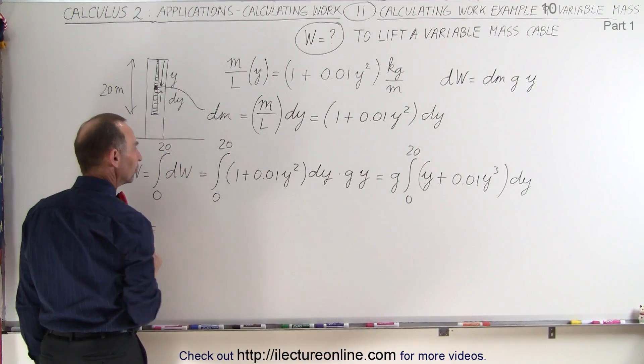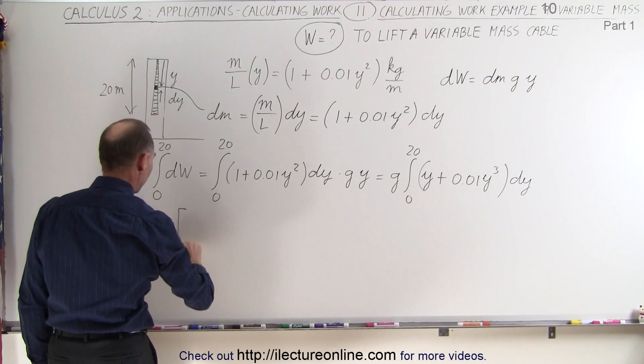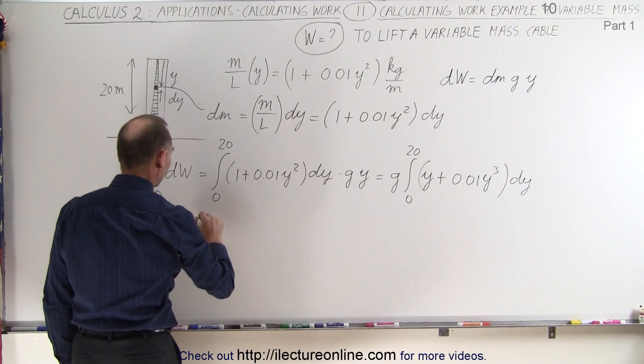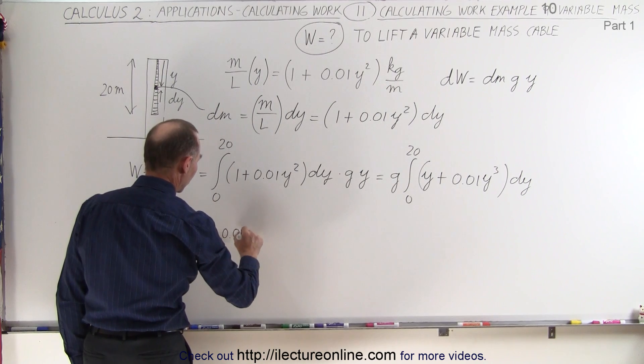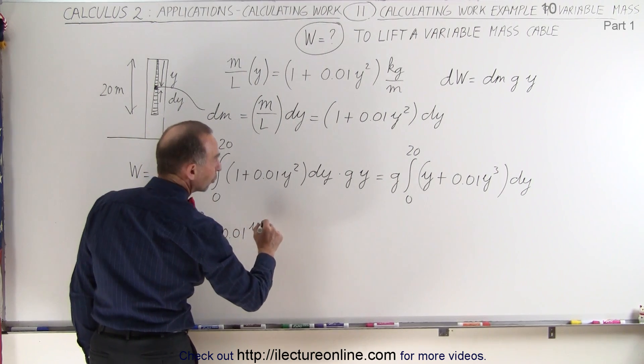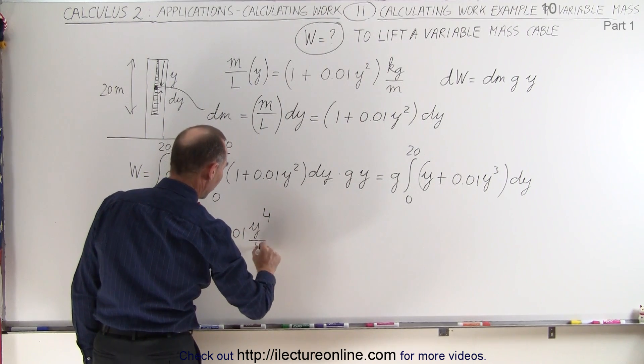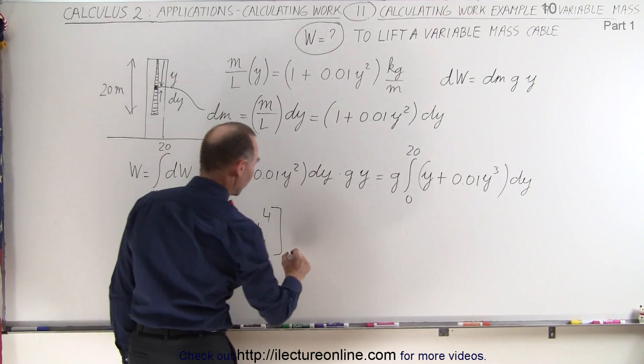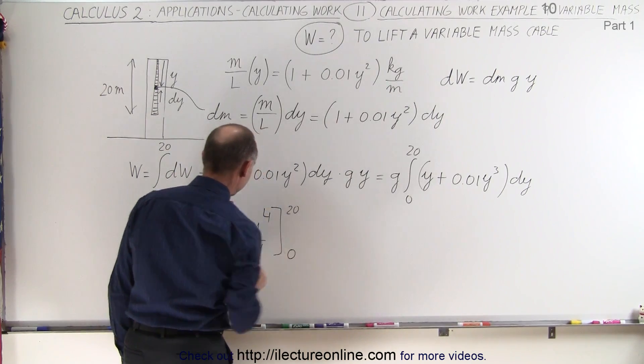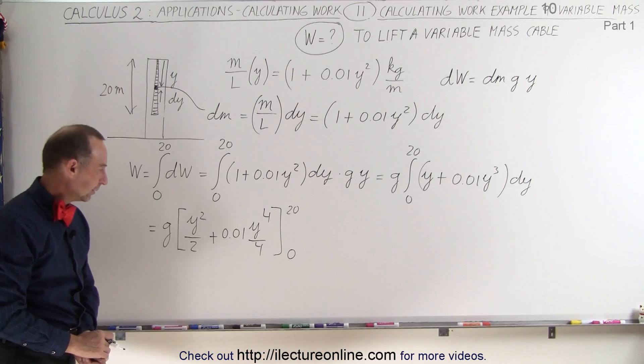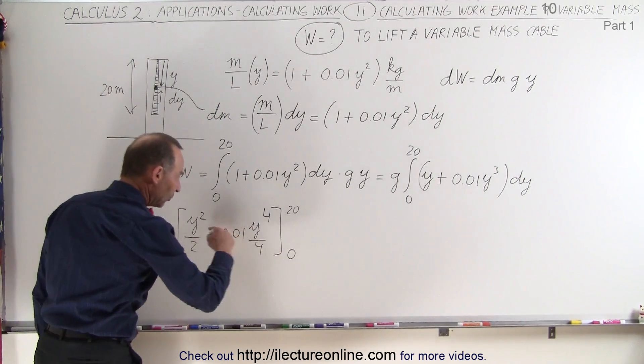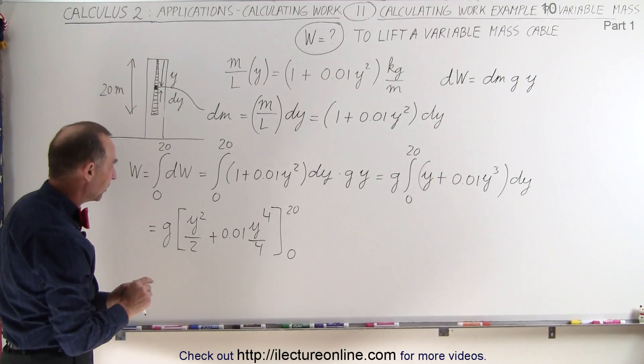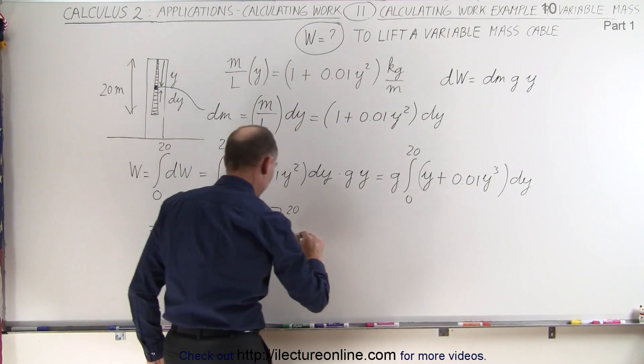So this is equal to, in the front we still have a g times y squared over 2 plus 0.01y to the fourth over 4 evaluated from 0 to 20. All right, let's see what we have here. When we plug in the lower limit, we get 0, so we don't have to worry about the lower limit. When we plug in the upper limit, we get the following.